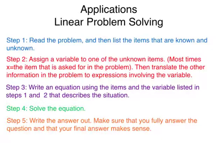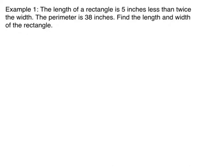Now let's go ahead and apply these steps to solving a couple problems. Our first example says, the length of a rectangle is 5 inches less than twice the width. The perimeter is 38 inches. Find the length and width of the rectangle.